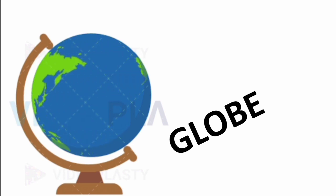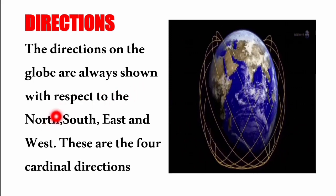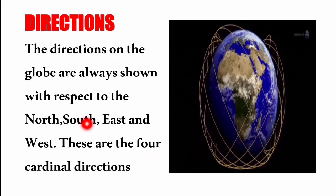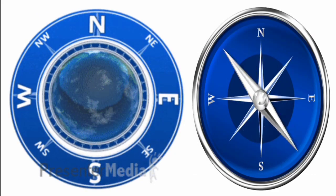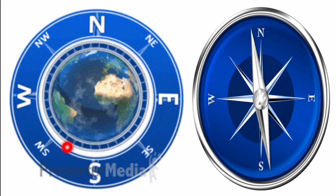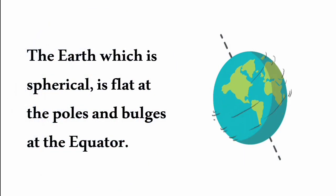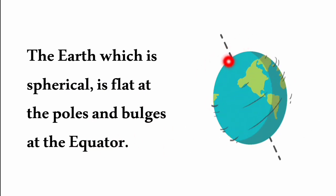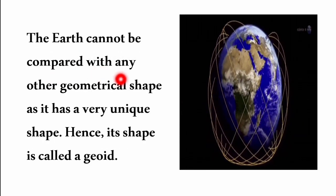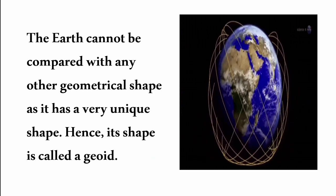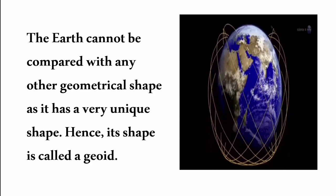A globe is an important tool for a geographer. Directions are shown with respect to four cardinal directions: North, South, East and West. The intermediate directions are Northwest, Northeast, Southwest and Southeast. The Earth is spherical, flat at the poles and bulging at the equator. Its shape cannot be compared to any other geometrical shape, so it is called a geoid.